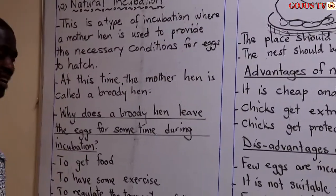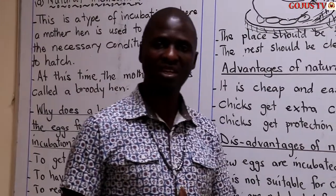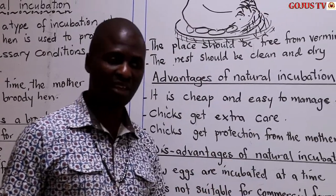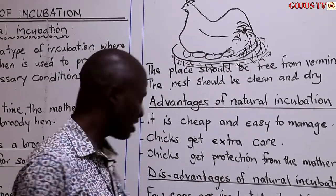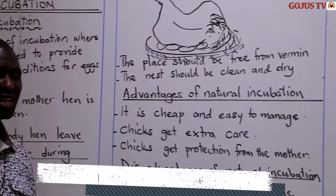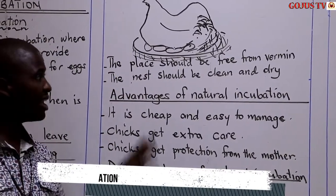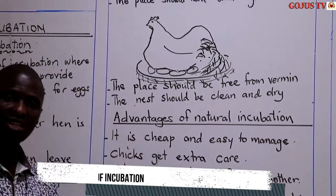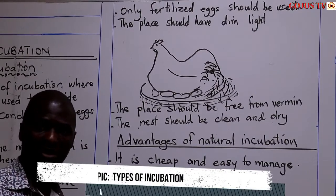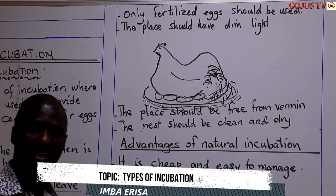How to ensure effective natural incubation. If we wanted our eggs to hatch in big numbers, if we wanted our hen to incubate the eggs successfully and get many chicks, these are the things we are supposed to look at. Number one, only fertilized eggs should be used. Eggs get fertilized when our hen, during the laying season, is exposed to a cock. When a cock mounts the hen, we are assured that the eggs laid are fertilized.